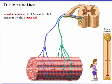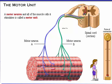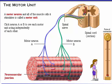A motor neuron and all of the muscle cells it stimulates is called a motor unit. Two motor neurons coming from the spinal cord are shown emerging from a spinal nerve. Each neuron branches, forming neuromuscular junctions with several muscle cells. Click neuron A or B to see each motor unit acting independently of each other.